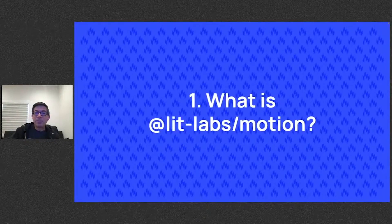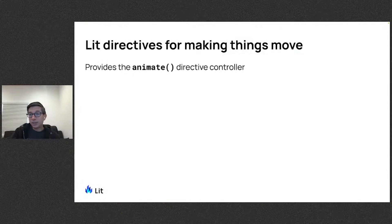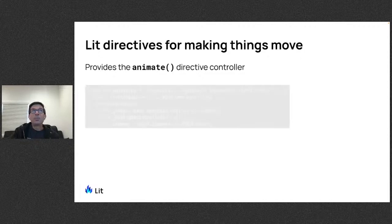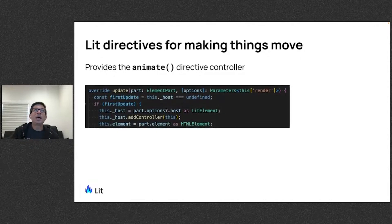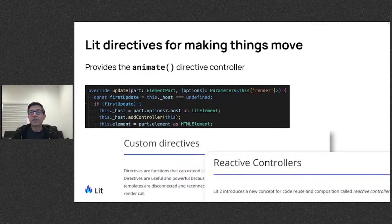So what is the motion package? It's a set of Lit directives for making things move. Right now we have just one: the animate directive, which is actually a directive controller. You can see the update method calls addController on the element. If you want to learn more about custom directives and reactive controllers, check out the docs on lit.dev.